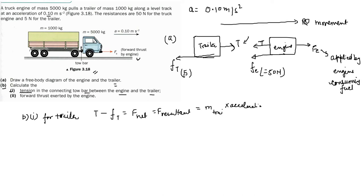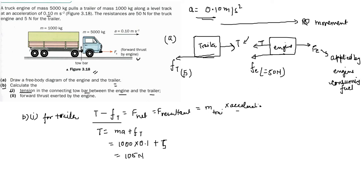We know the acceleration — it is given. So T = ma + f. The mass is 1000 kg, acceleration is 0.1 m/s², and friction is 5 N. So T = (1000 × 0.1) + 5 = 100 + 5 = 105 N. This is the tension acting between the trailer and the engine.